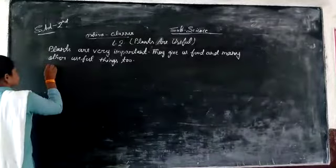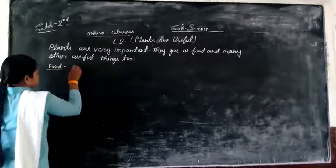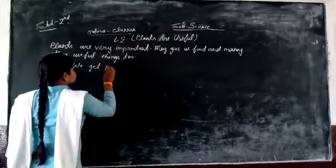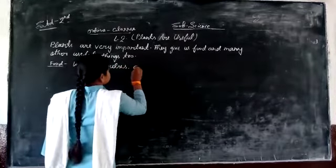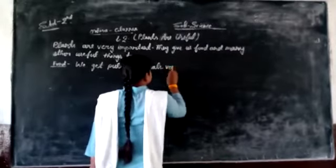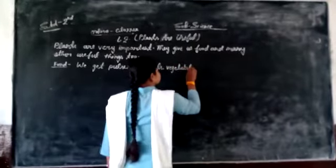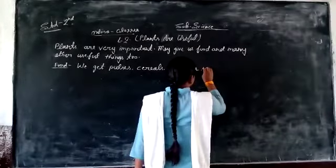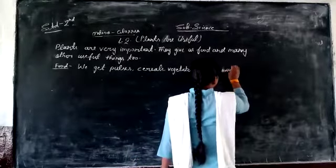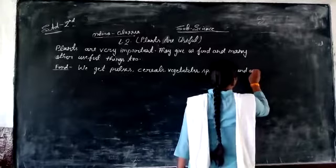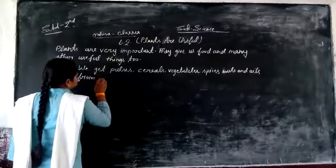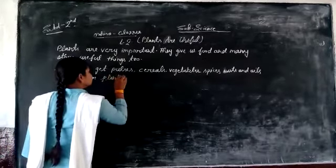Food from plants includes vegetables, vegetable spices, nuts, and oils.